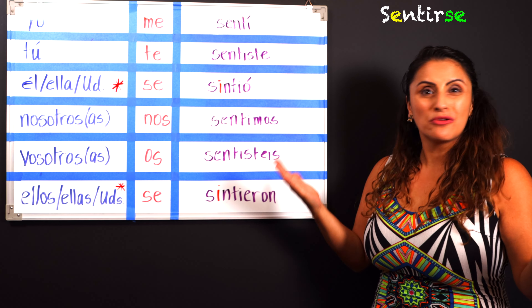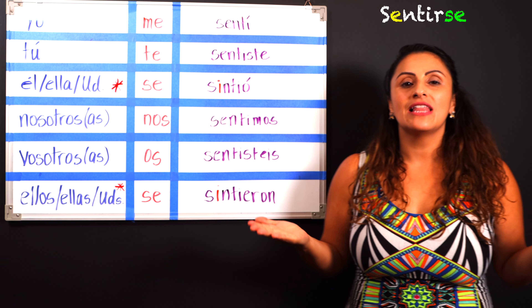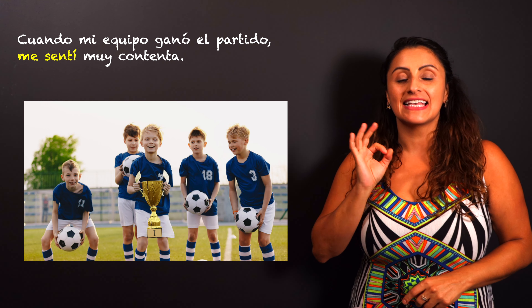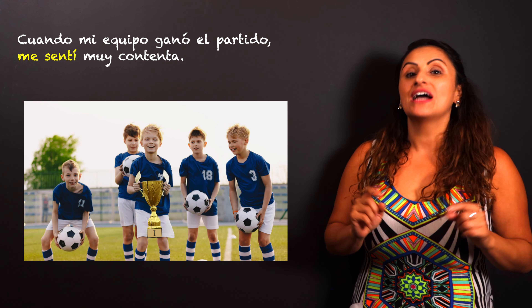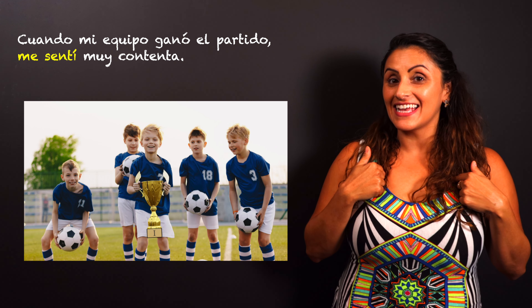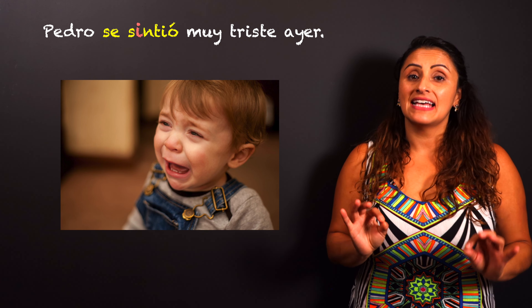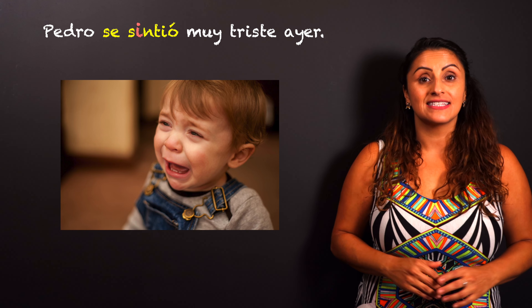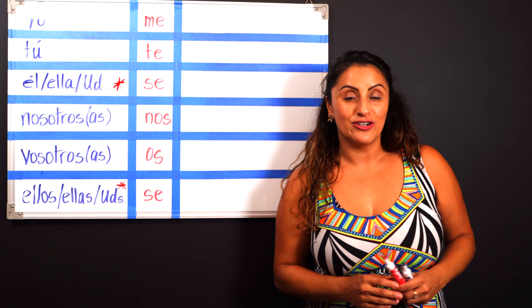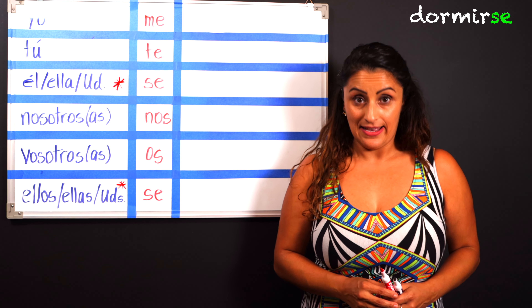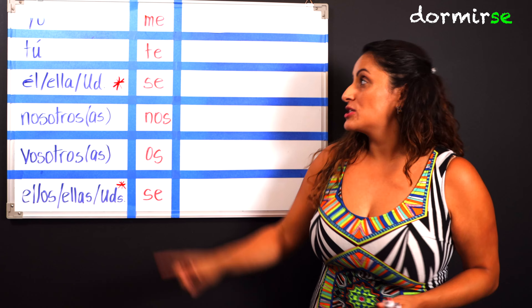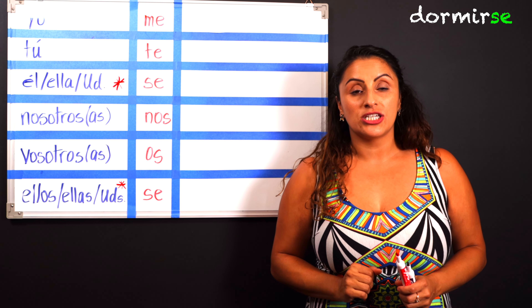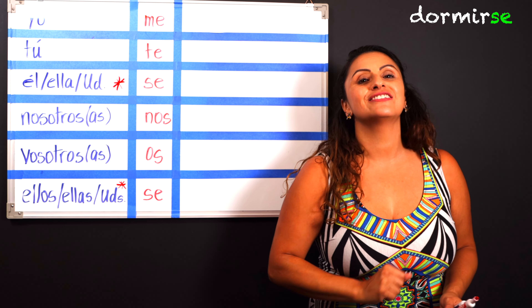Let's go ahead and look at how we would conjugate these verbs in the preterite. We're going to start with the verb SENTIRSE, which means to feel a certain way. We know that SENTIRSE is a reflexive verb, so we put our reflexive pronouns here. We also know that SENTIRSE has a stem-change in the present tense, so therefore it will stem-change in the preterite — but only in the third person singular and plural. That E on the stem is going to change to I, only in the third person. For the rest, we're going to treat it like a regular verb in the preterite.